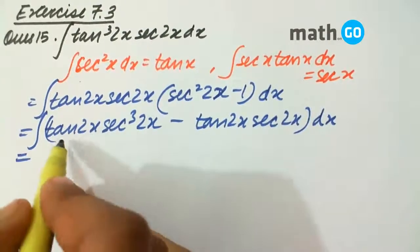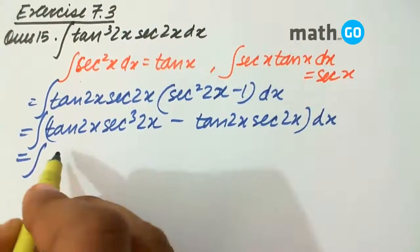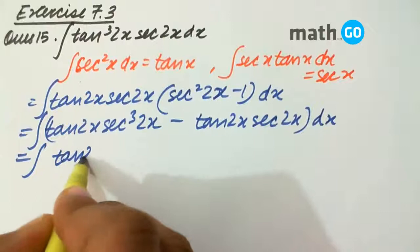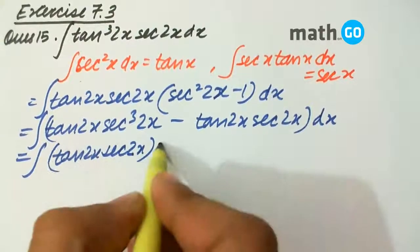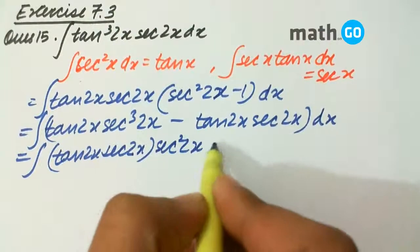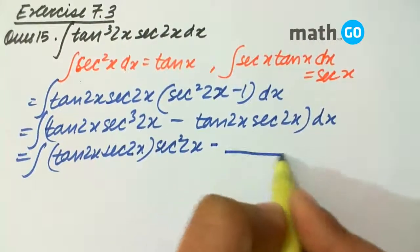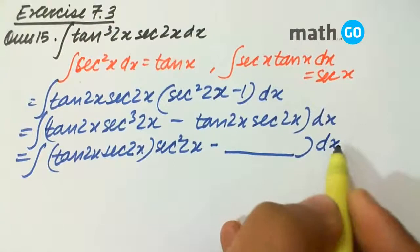So, this way we can further write it as tan 2x into sec 2x into sec square 2x minus this complete expression dx.